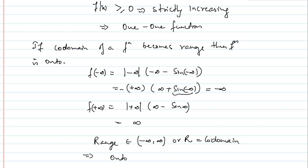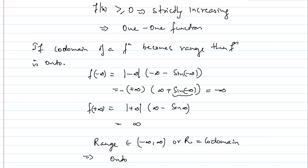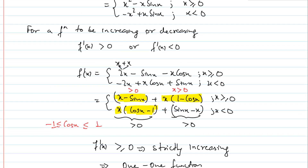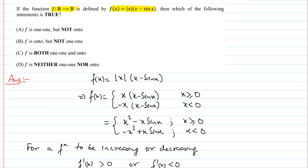तो co-domain के बराबर range आ गया, hence function onto हो गया। Function 1-1 भी है और onto भी है। Options check करें: Option A — f is 1-1 but not onto; Option B — f is onto but not 1-1। तो हमारा answer C option है। Thank you।